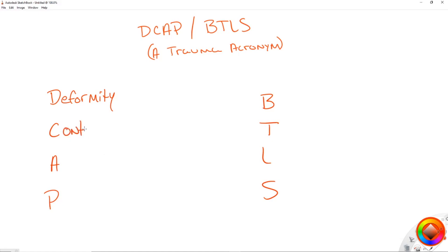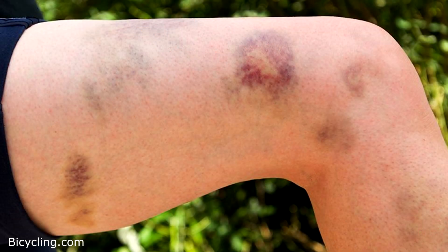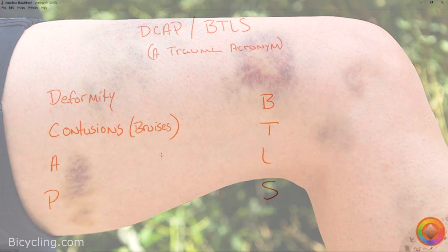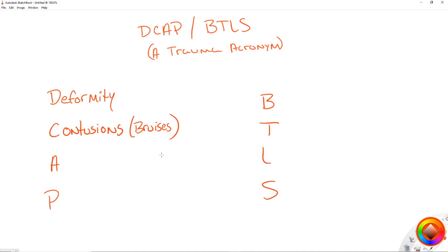The next thing we're wanting to look for are contusions, and contusions are just bruises. We all know what a bruise is — we're looking for that blood vessel breakage right under the skin where the blood collects and creates a bruise.